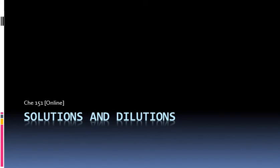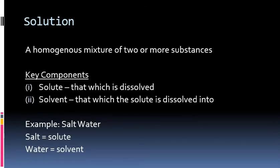Hello, esteemed General Chemistry 1 students. Today we are going to cover solutions and dilutions. A solution is essentially a homogeneous mixture of two or more substances. Usually you would see a solution as something dissolved in a liquid. The two key components of a solution are the solute and the solvent. The solute is that which is dissolved, while the solvent is that which the solute is dissolved into.